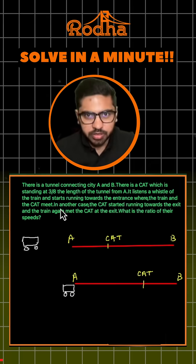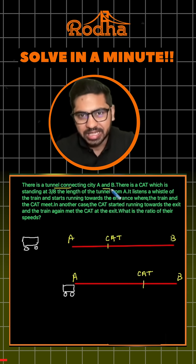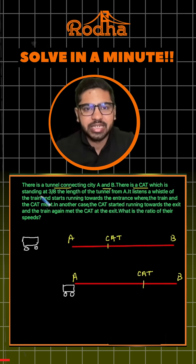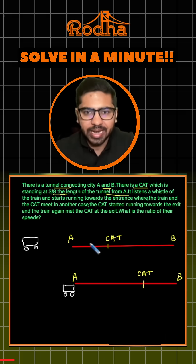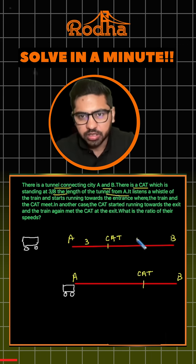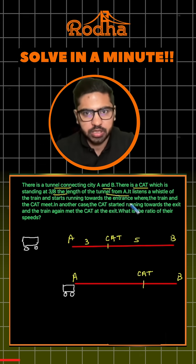Let's try to solve this question within a minute. There is a tunnel connecting city A and B. There is a cat which is standing at 3/8 of the length of the tunnel from A. So if the total length is 8, the cat is at position 3, and the remaining distance to the exit is 5.